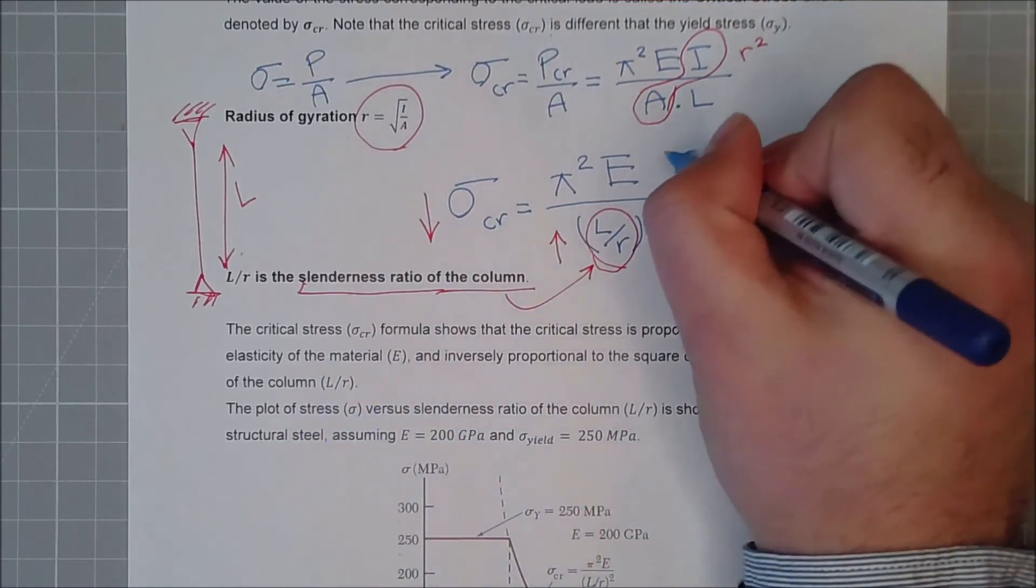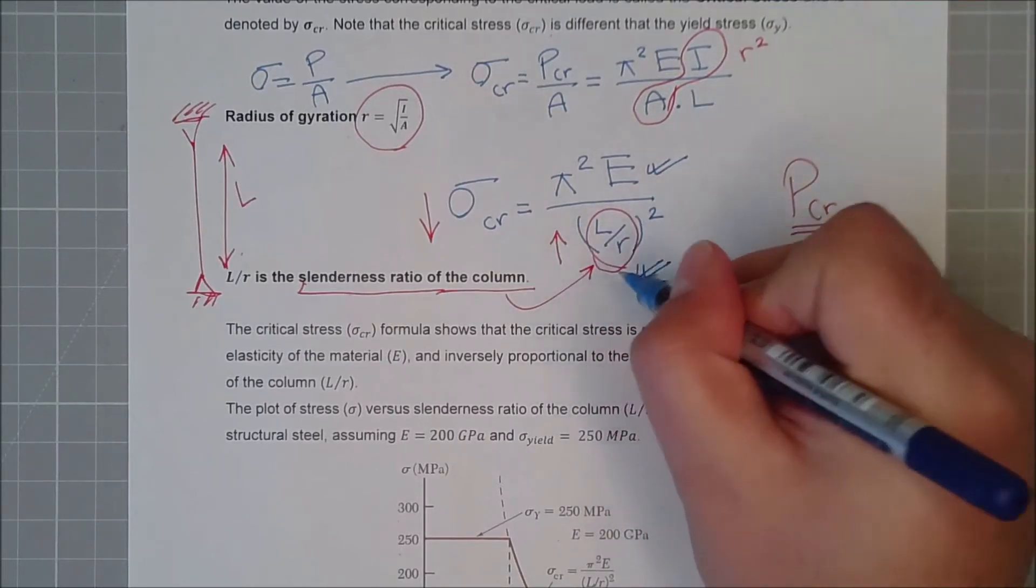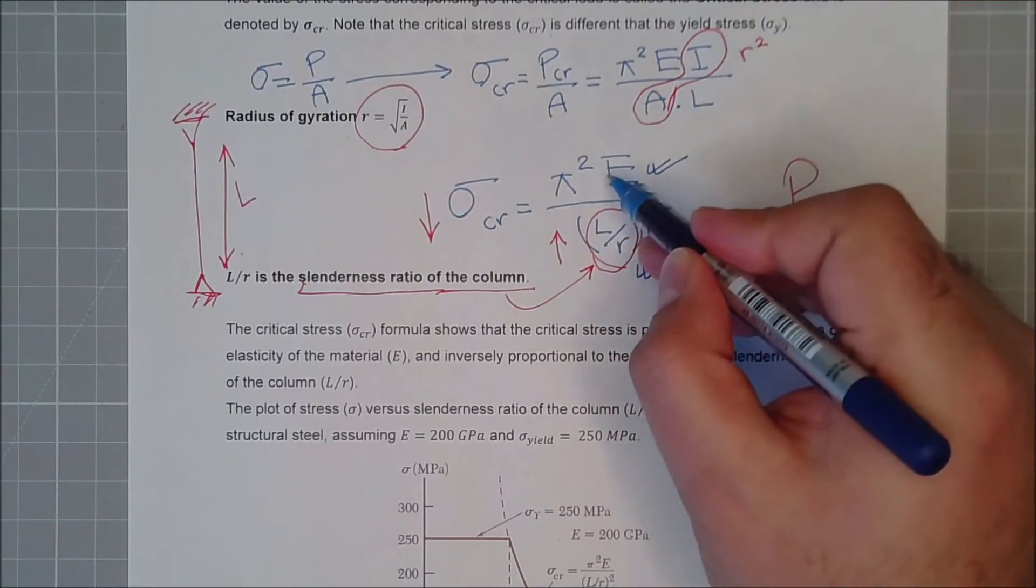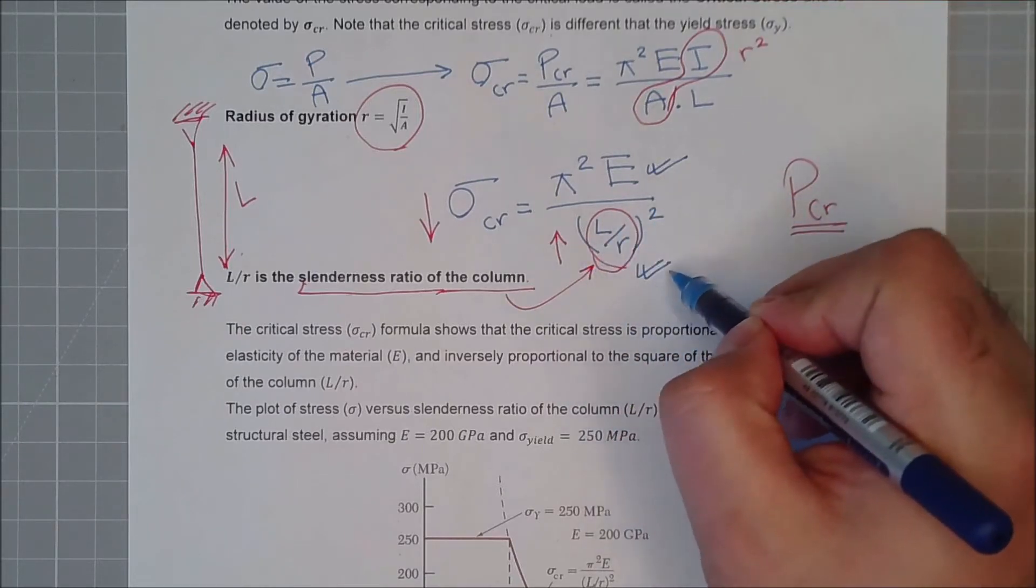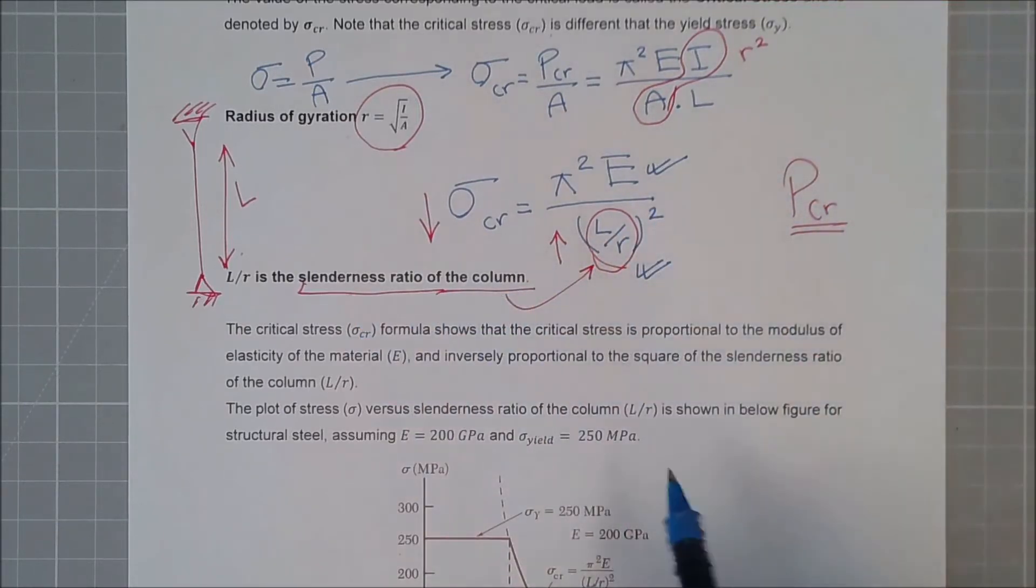And inversely proportional to the square of the slenderness ratio of the column L over r. Yes, in this case, you see, we only have two bits. One is slenderness ratio and one is E, so directly related to material, inversely related to the slenderness ratio.